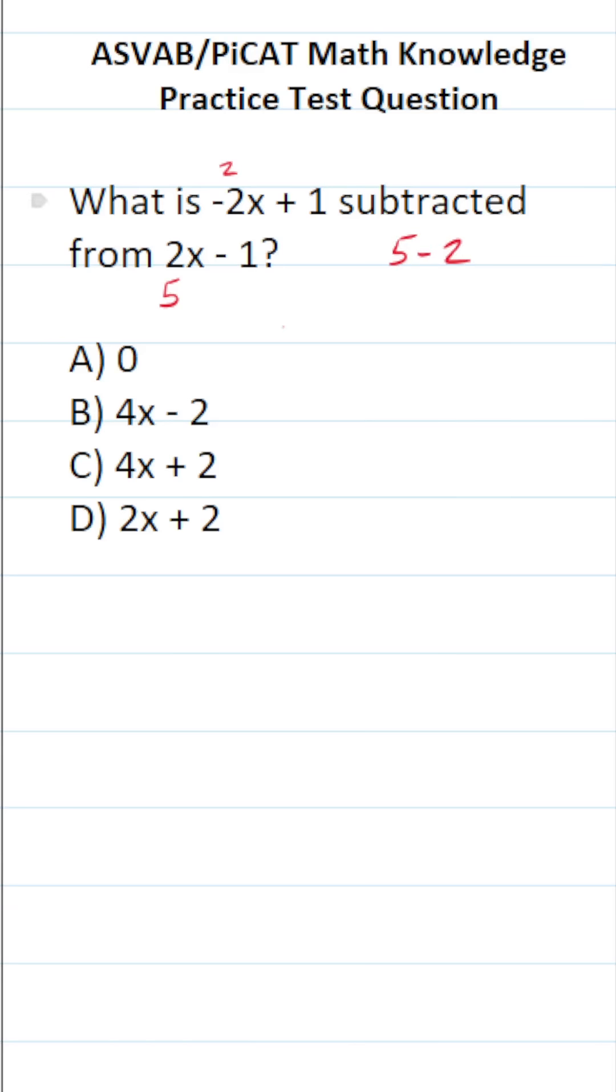We're going to do the same thing, albeit algebraically. Again, this says what is negative 2x plus 1 subtracted from 2x minus 1? So it's going to look like this algebraically: 2x minus 1, and we're subtracting this entire polynomial. So we have to put parentheses there. And in parentheses, we're going to put this polynomial negative 2x plus 1.